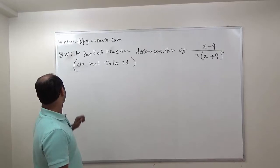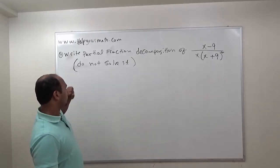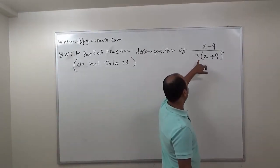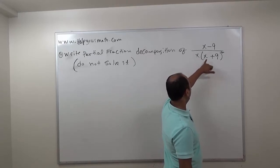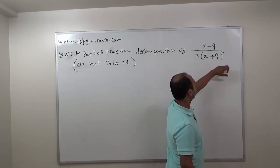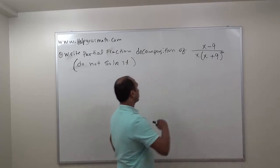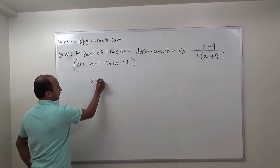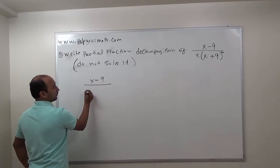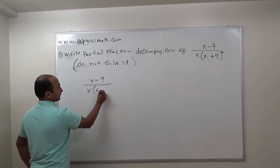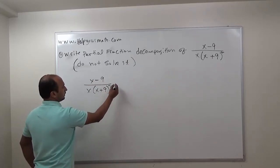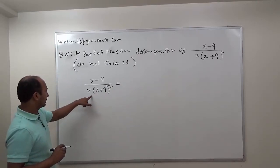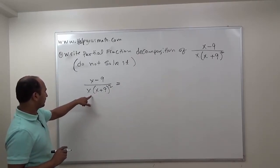Let's continue with Example 3 of partial fraction decomposition. Example 3: write the partial fraction decomposition of (x minus 9) over x times (x plus 9) squared. We write (x minus 9) over x times (x plus 9) squared, which equals...